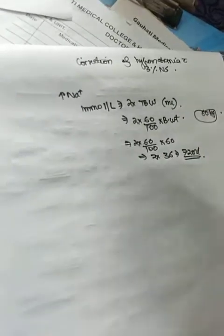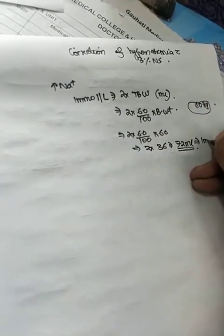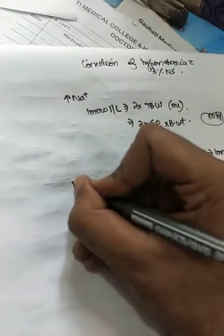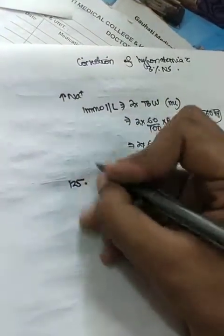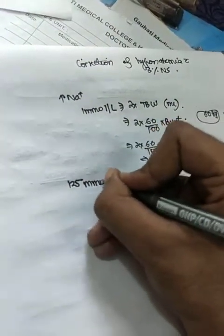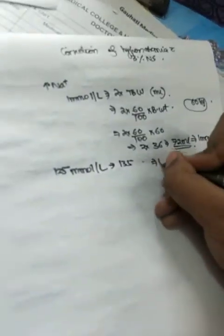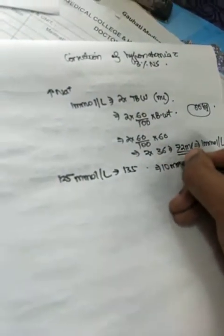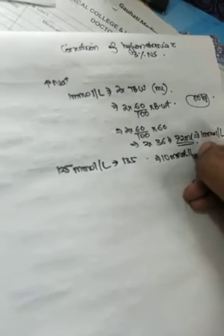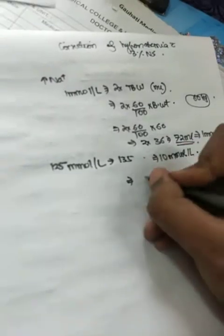This 72 ml is required to increase the serum sodium by 1 millimole per liter. Suppose the patient's serum sodium is 125 millimole per liter and you have to increase it to 135 for correction. So that means you require the serum sodium to increase by 10 millimole per liter.